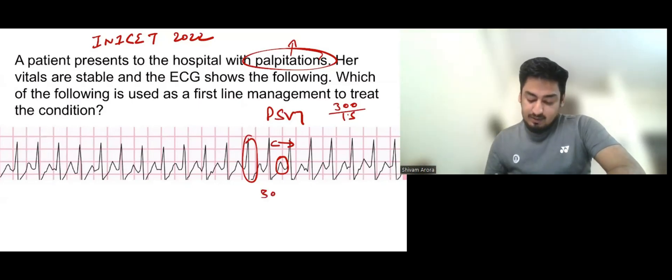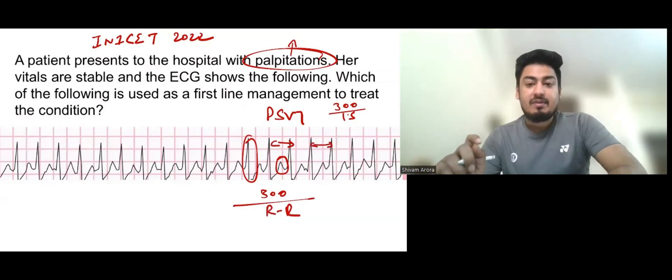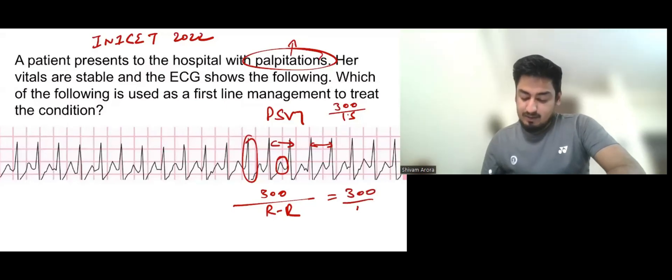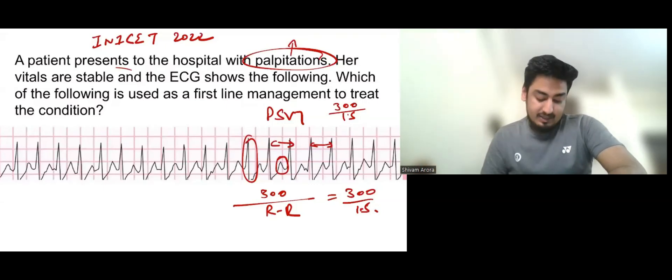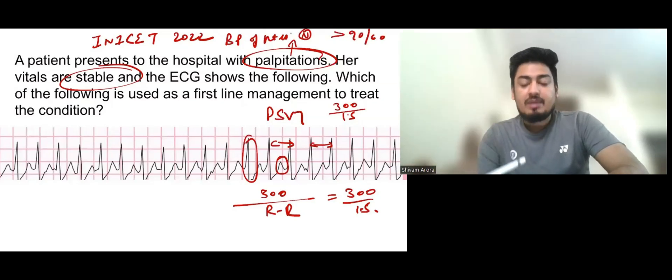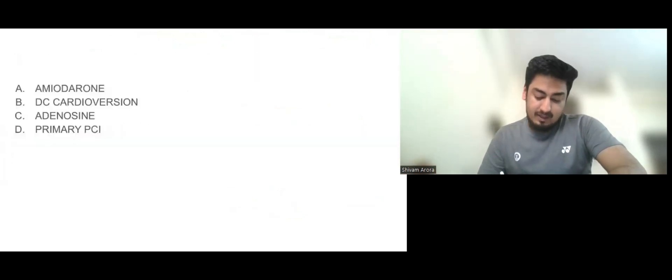Heart rate is also somewhere around 300 by 1.5, so it is somewhere around 170 to 180. How I calculated the heart rate: heart rate is calculated by 300 upon RR interval, which is somewhere around 1.5 biggest squares, so it is 300 by 1.5. Now it is PSVT. Second thing is the vitals are stable, the BP of patient is normal, more than 90 by 60.